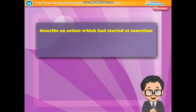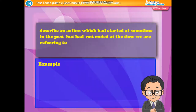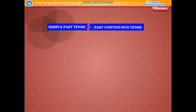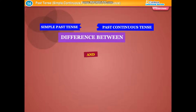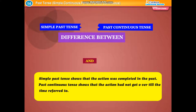The past continuous tense is also used to describe an action which had started at some time in the past but had not ended at the time we are referring to. Example: The lady was crying with pain last evening when I visited her. Difference: Simple past tense shows that the action was completed in the past, while past continuous tense shows that the action had not got over till the time referred to.